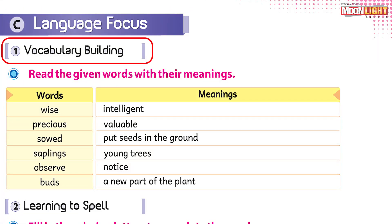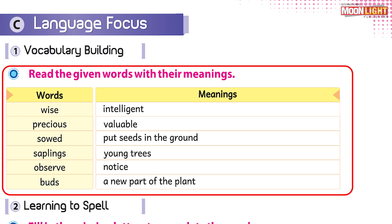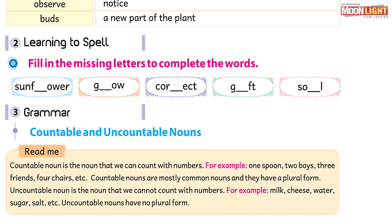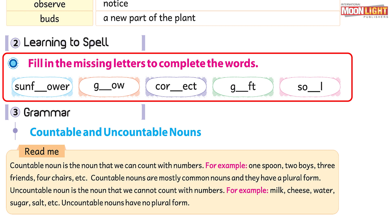The first category is Vocabulary Building. We have already accomplished it while reading the text of this unit. Now it's time to move towards our next category, and that is Learning to Spell. Students, we have been given many words but they are incomplete as some of the letters are missing. Let's explore the missing letters.